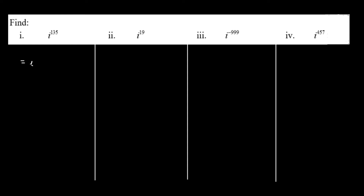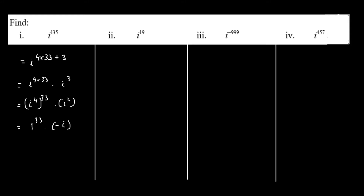We need to determine the value of each expression. Starting with i raised to the power of 135, we rewrite 135 as 4 times 33 plus 3, giving us i^(4×33) times i^3. Since i^4 equals 1, i^(4×33) simplifies to 1. The value of i^3 is i squared times i, and since i squared is negative 1, i^3 equals negative i. So the final value is 1 times negative i, which gives us negative i.